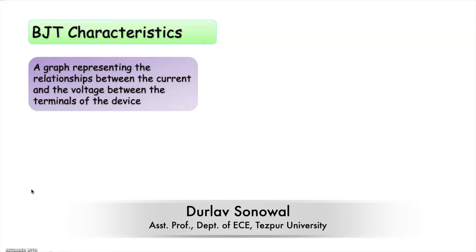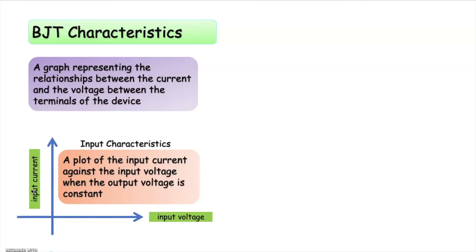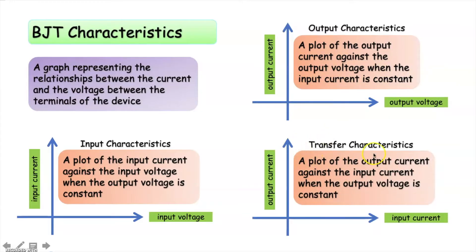When we say characteristics of an electronic device, we basically represent the relationship between the current and voltage between the terminals of the device. A BJT has three terminals, so we will try to find out the relationship between voltage and current between the three terminals. The input characteristics of a BJT represents a plot of the input current against the input voltage when the output voltage is constant. The output characteristics of BJT represents the plot of the output current against the output voltage when the input current is constant. And the transfer characteristics represents the plot of the output current and the input current when the output voltage is constant.